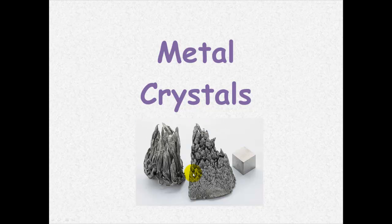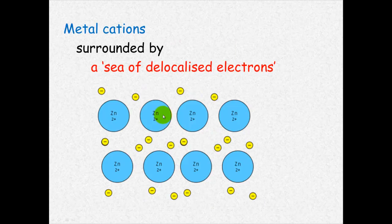Metals form these crystalline structures and this greatly affects their properties. But to understand this we must first be familiar with the metallic bonding model. What we have with metals are metal cations surrounded by a sea of delocalized electrons.